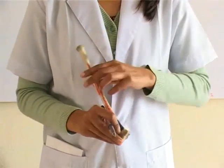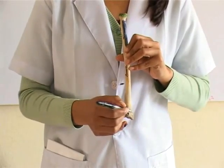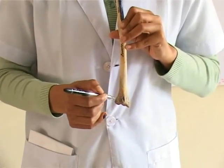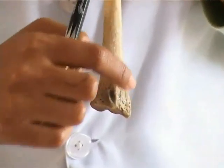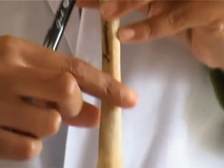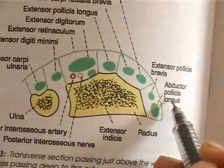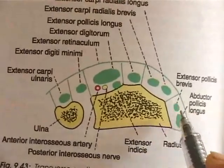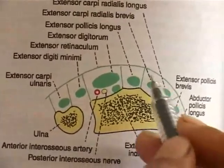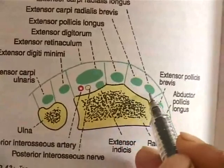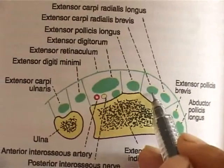The posterior surface gives attachment to the deep extensors of the wrist joint. The lower end provides four compartments for the passage of tendons and other structures. The first compartment contains the tendons of abductor pollicis longus and extensor pollicis brevis. The second compartment has two wrist extensors: extensor carpi radialis longus and extensor carpi radialis brevis.